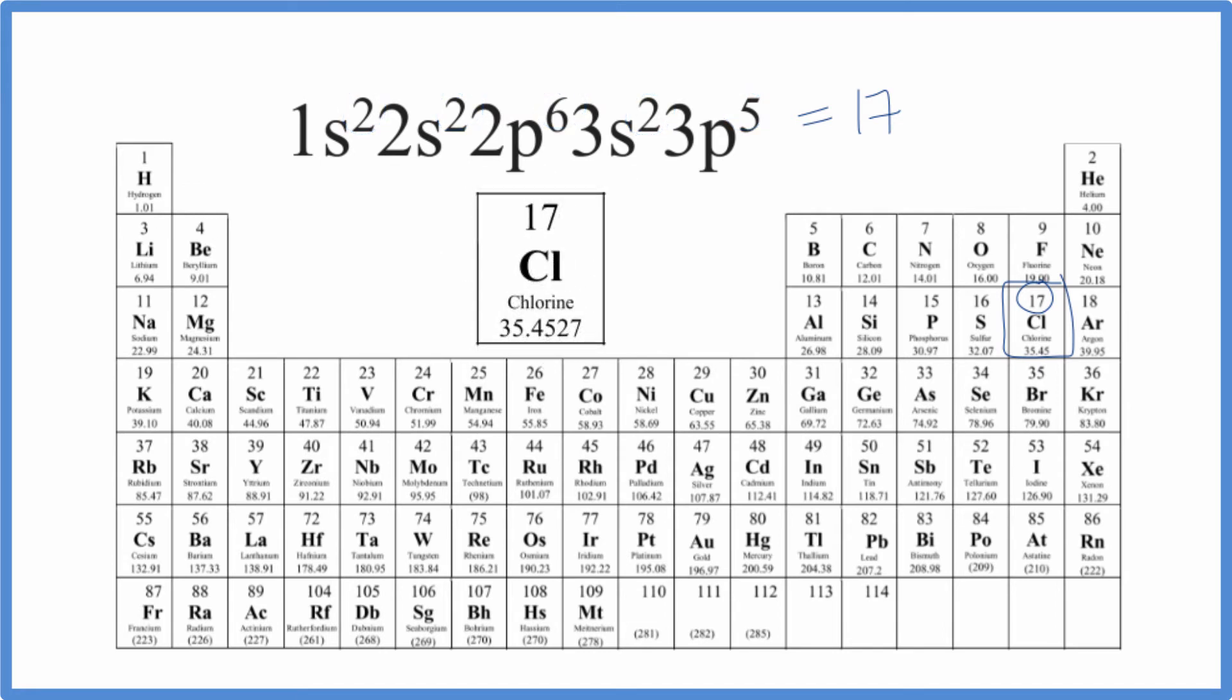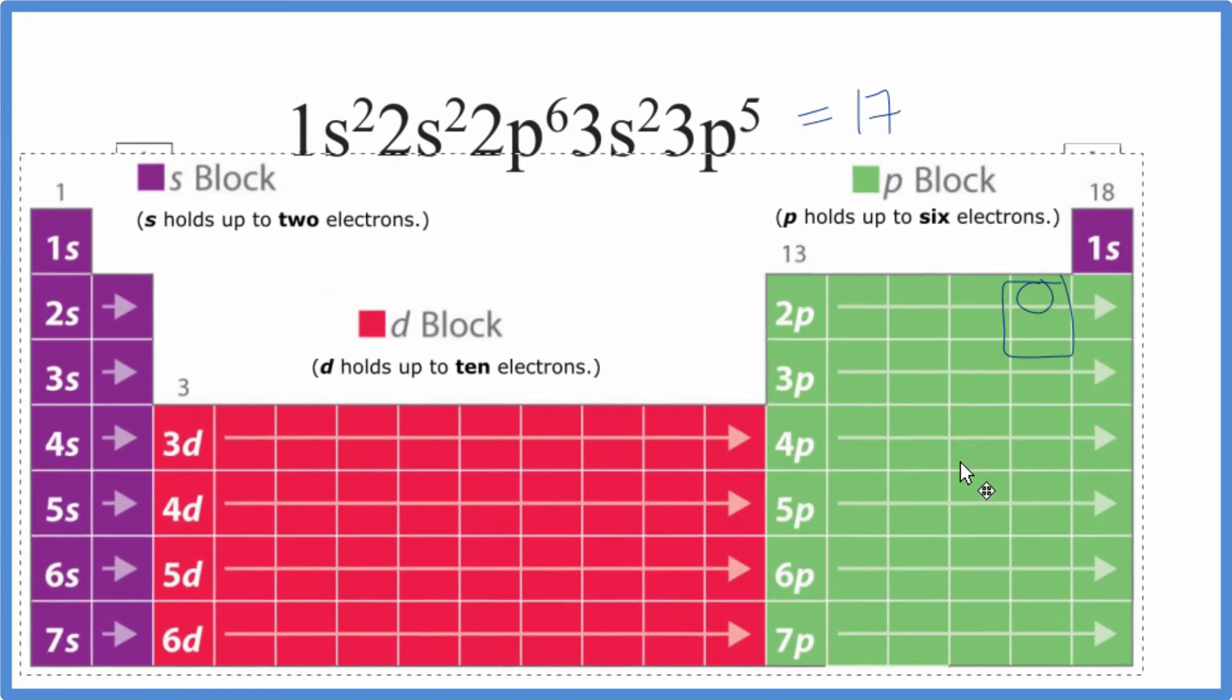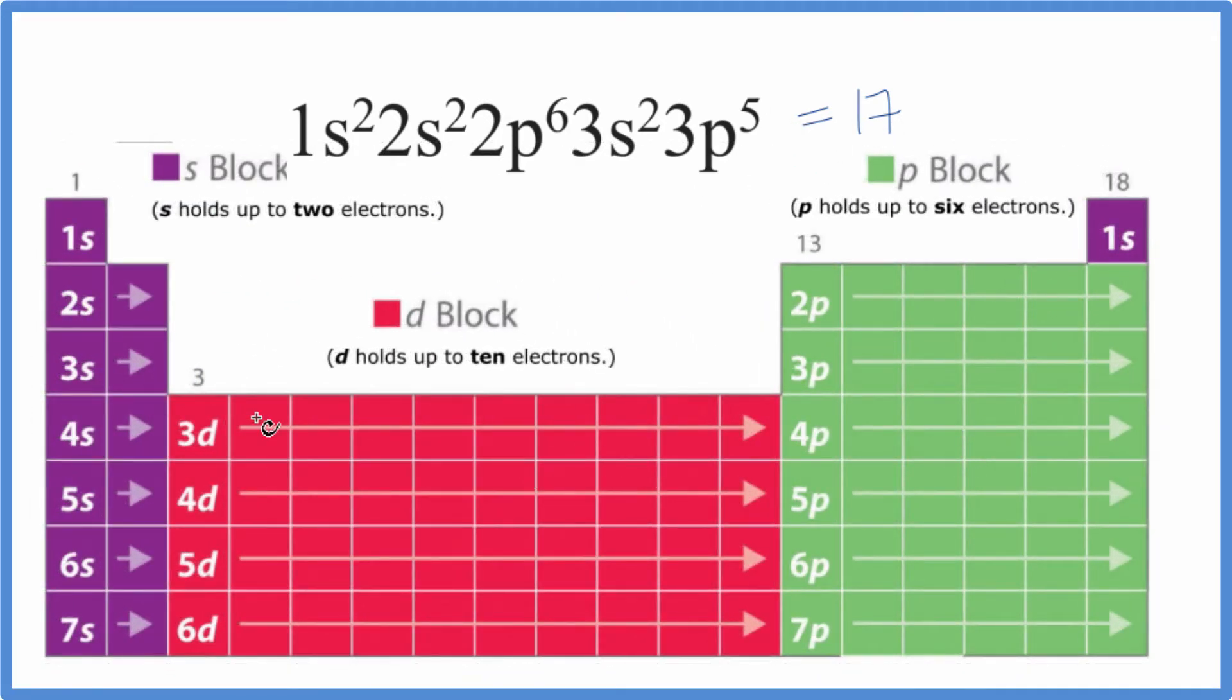There's another way we can do this. We could look at the periodic table divided up into these orbital blocks. So here, all of these have S1, S2, because the S orbital holds up to 2.